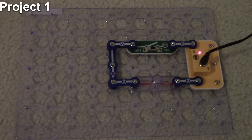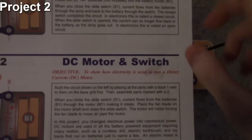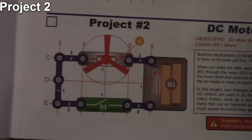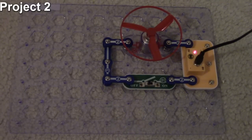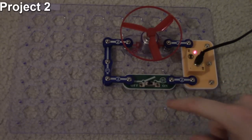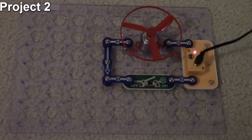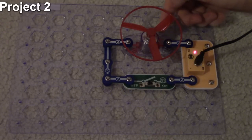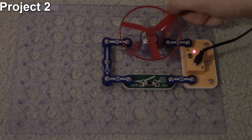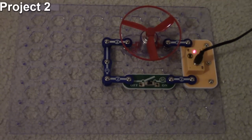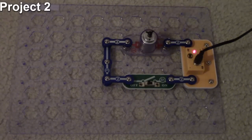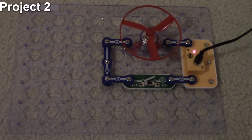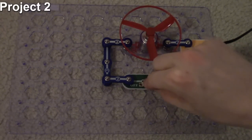In project two we now have a DC motor and a switch. The objective is to see how electricity is used to operate the DC motor. We move the switch down to the bottom and put the DC motor in place of the two-and-a-half volt lamp. There is a polarity marker on the motor — make sure the positive on the motor lines up with the positive on the battery source.